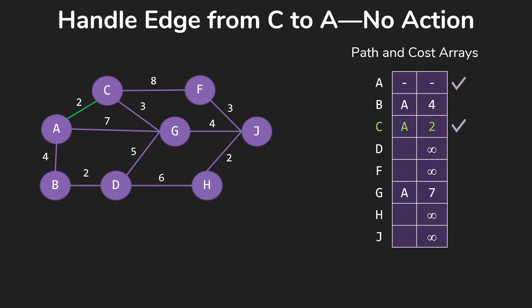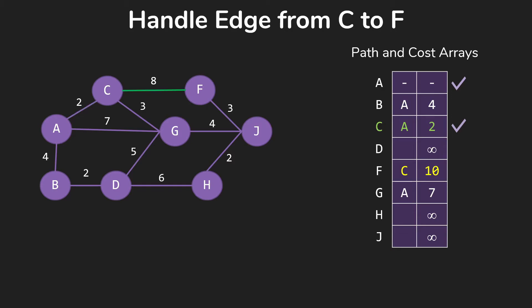So then we start looking at our edges. Of course, there's nothing to do from C to A. From C to F, we're going to now record that we can get to F through C at a total cost of 10, so that's the 8 for this edge plus the 2 it took to get to C. Do the same for G where we see that we had a cost of 7. Our total cost through C is going to be the 2 to get to C plus 3 for this edge, so that's 5.